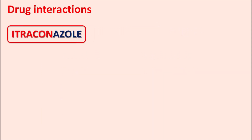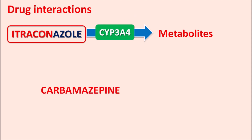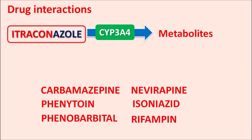Drug interactions also exist between itraconazole and enzyme inducers. Itraconazole not only inhibits CYP3A4 but is also itself metabolized by the same CYP3A4 enzyme. Drugs such as carbamazepine, phenytoin, phenobarbital, anti-HIV agents like nevirapine, and anti-tuberculosis agents like isoniazid and rifampin all act as enzyme inducers — they can induce the metabolism of itraconazole, resulting in the loss of its activity.